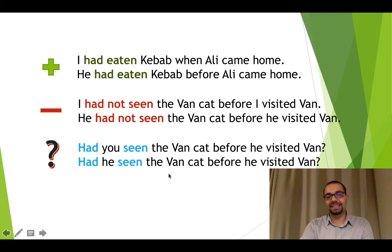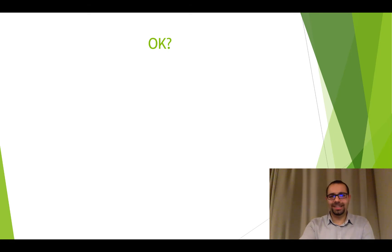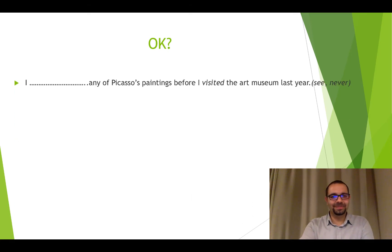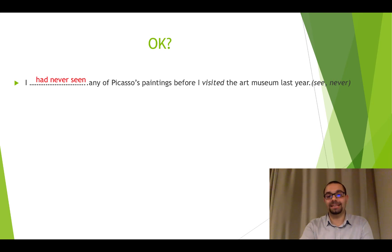Had he seen it before he visited? All right, are you ready for a short quiz? Let's go. First item — the keyword is 'never': 'I had never seen any of Picasso's paintings before I visited the art museum last year.'